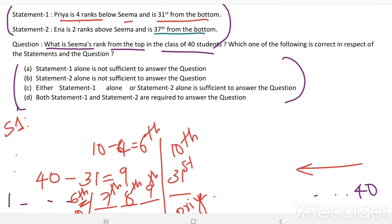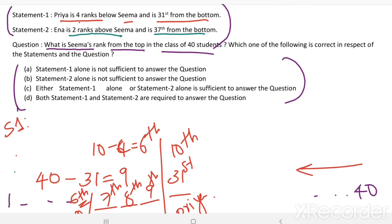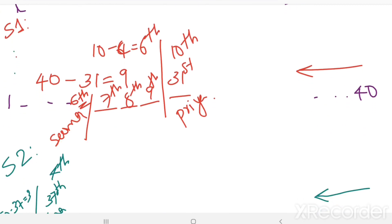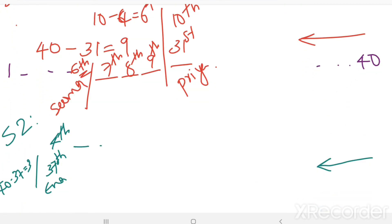Then Inna is 2 ranks above SEMA. That means SEMA is 2 ranks below Inna. 2 ranks below Inna means 1, 2. This is 5th. This is 6th. SEMA is at 6th. Statement 2 alone is sufficient to find SEMA's rank from the top.